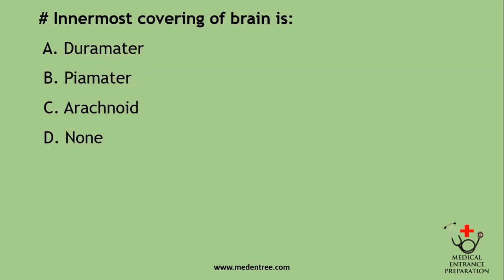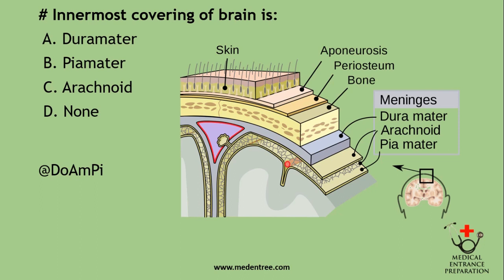The innermost covering of the brain is: dura mater, pia mater, or arachnoid mater? Arachnoid means spider-like; it has a net-like pattern and is found in the middle. The innermost is pia mater. From outside to inside: dura, arachnoid, and pia mater. A useful mnemonic is 'DAP' — Dura (outer), Arachnoid (middle), Pia (inner). Pia mater is the innermost.